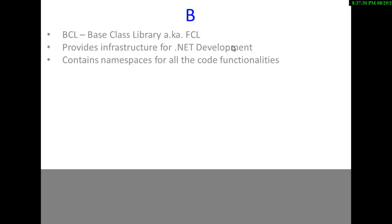As I just said, BCL actually contains namespaces for all the code functionalities. So if you are looking for database related functionality, which is the most common thing to achieve in any kind of application you have ever built, that functionality is part of Base Class Library in .NET and it lives inside a namespace called System.Data. Similarly, if you are trying to do some file input-output handling, you need to include System.IO.